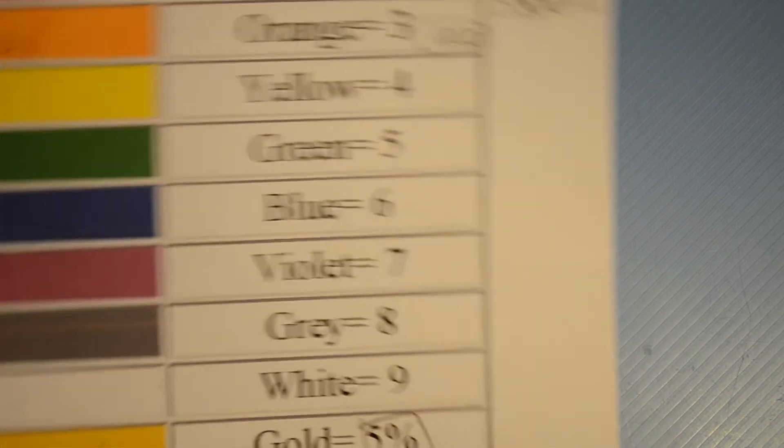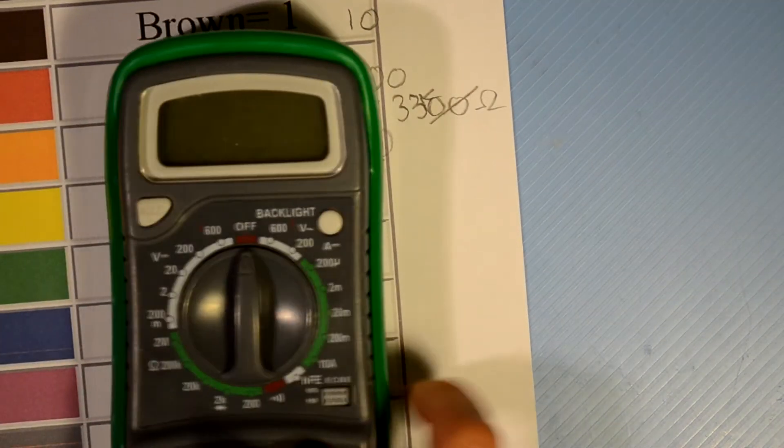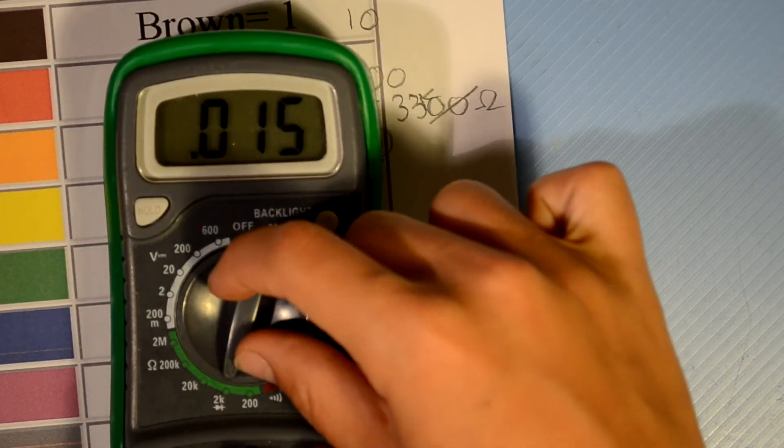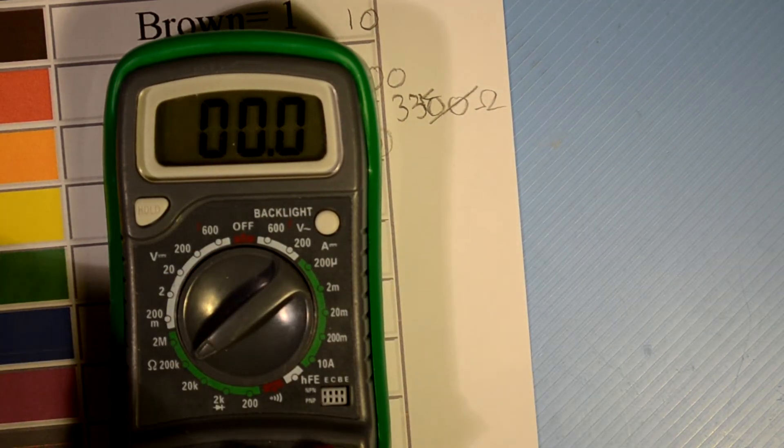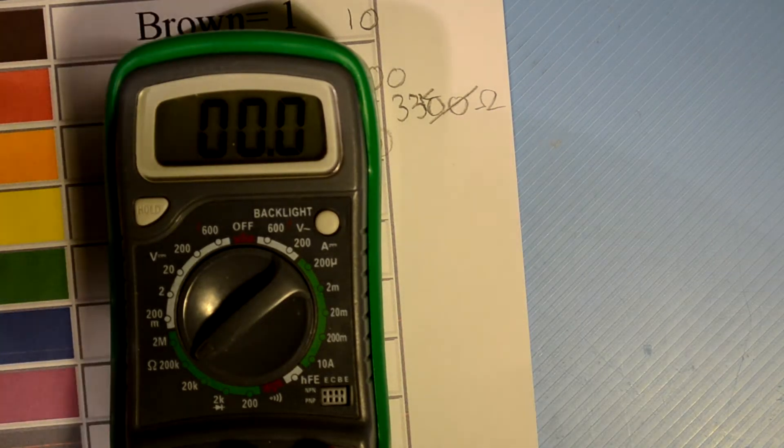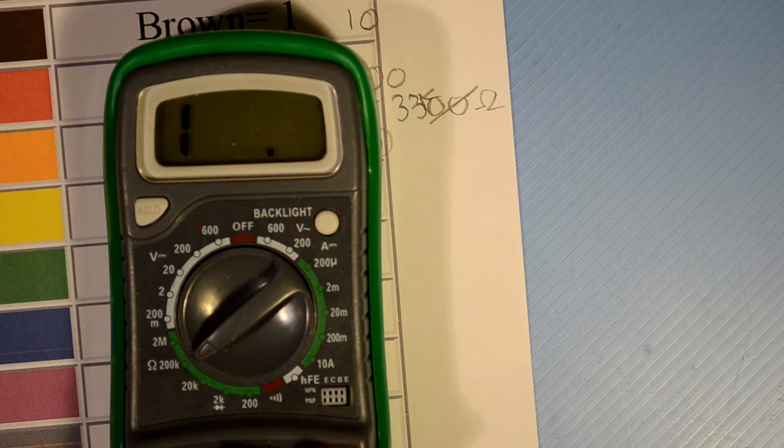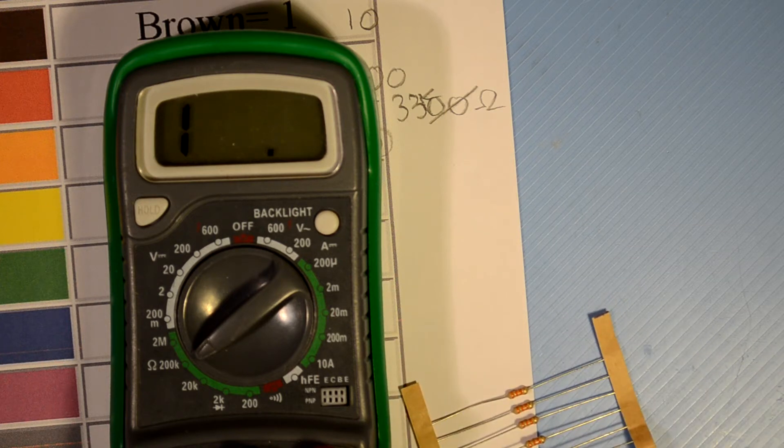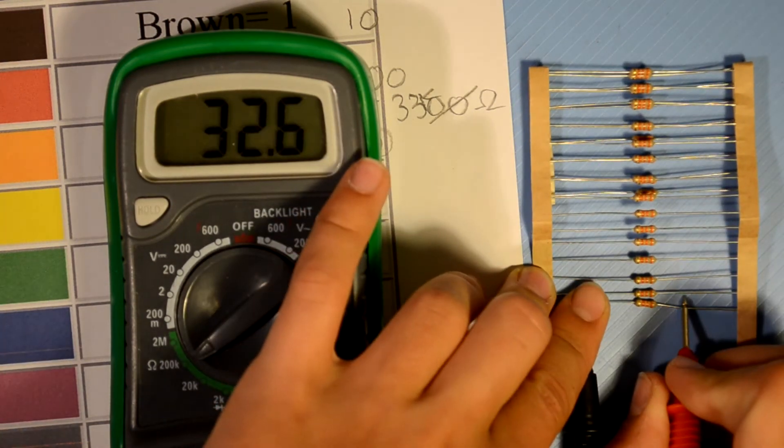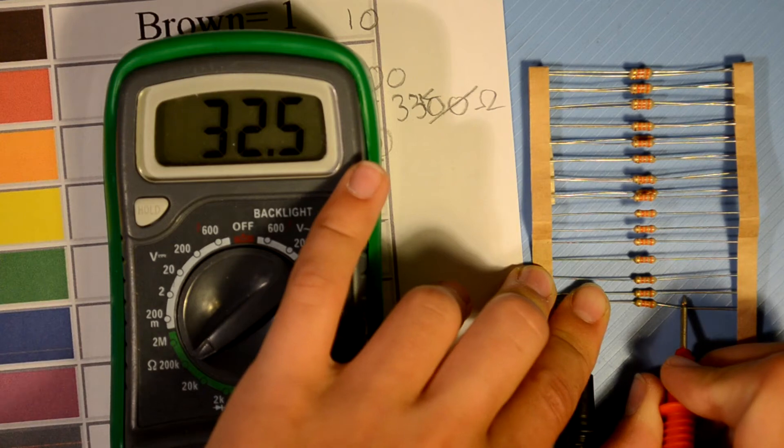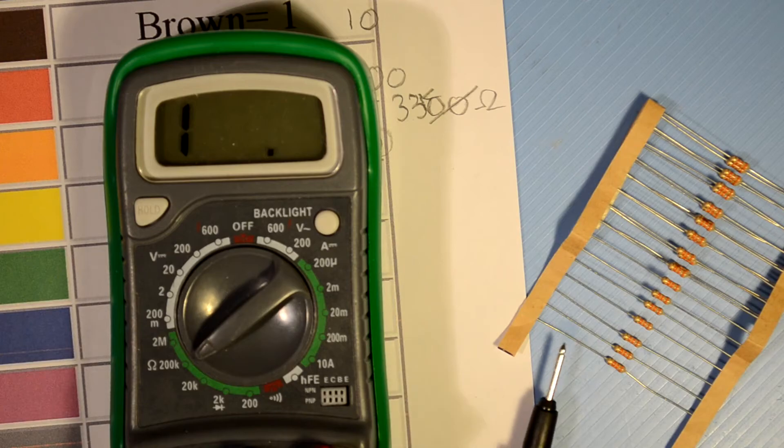So, we can test the resistance by taking our multimeter here. And we're going to switch it to something above 33. My multimeter will go to 200K. We're going to take our test probes. And these. We get 32.5, which is within the 5% accuracy tolerance of these resistors.